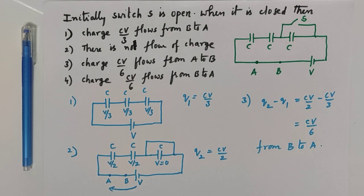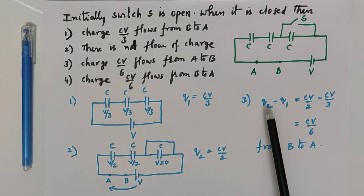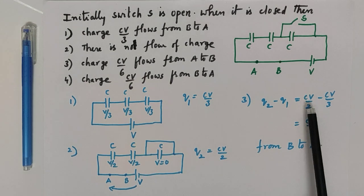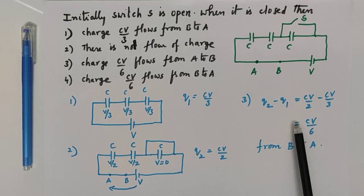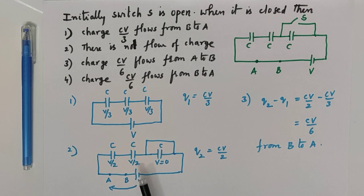So the extra charge that is flown is Q2 minus Q1. CV by 2 minus CV by 3, that is equal to CV by 6. So the battery is supplying an extra charge.